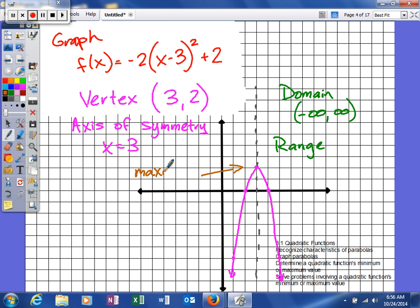So if you have a positive a, then your vertex will be a minimum. But if you have a negative a, your vertex will be a maximum value. And since our graph is opening down, we would say our y's are going to go from positive 2 to negative infinity.